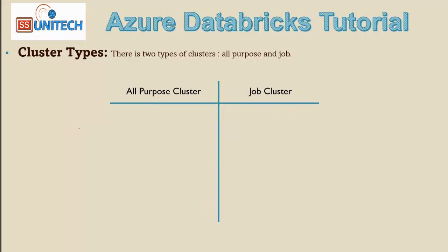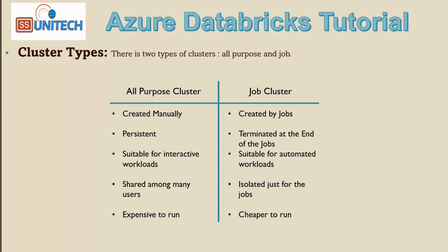Let's understand the differences between these two. For the all-purpose cluster, it is created manually. Whenever we want to execute any notebook, we have to use a cluster behind the scenes. In the case of the all-purpose cluster, we create it manually and attach it to that particular notebook so we can utilize it when executing manually. On the other hand, for the job cluster, it is created by a job — whenever a job is created and starts executing, the cluster is created at that point.